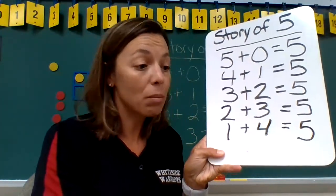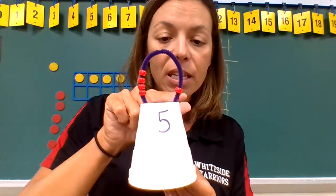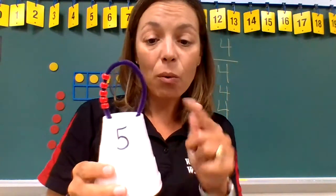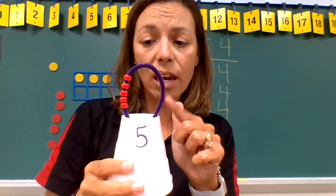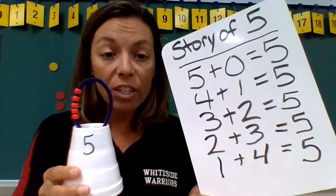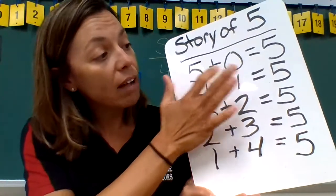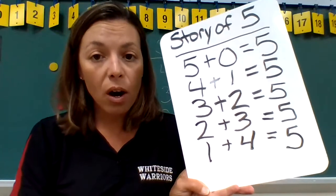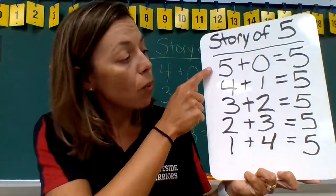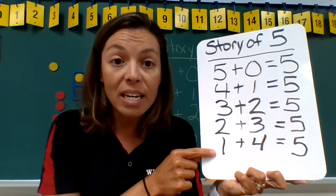Let's see if there are any more beads we can move. Here's our cup — we have one bead on this side, so let's move it to the other side. Right now we have no beads on one side but five beads on the other. If you picked zero plus five equals five, you are correct. As you can see in the story of five, we have one, two, three, four, five ways of making the number five.